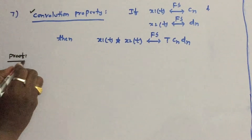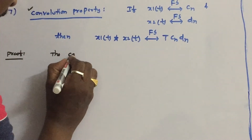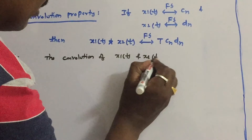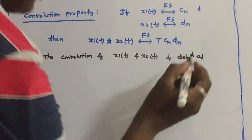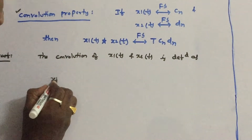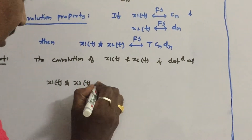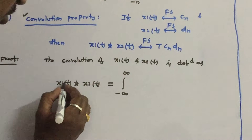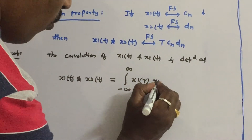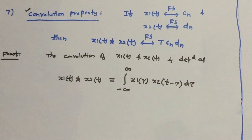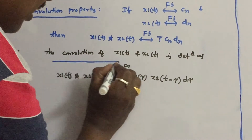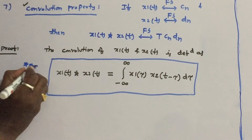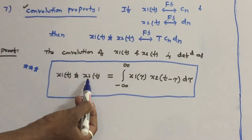Let us prove this. The convolution of x1 of t and x2 of t is mathematically defined as: x1 of t convolved with x2 of t equals integral from minus infinity to infinity of x1 of tau times x2 of t minus tau d tau. Remember this definition — it is a very important mathematical equation that will appear many times throughout this subject.